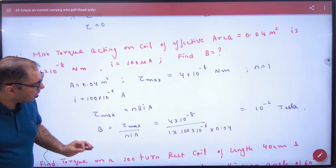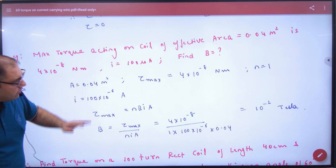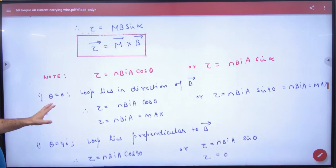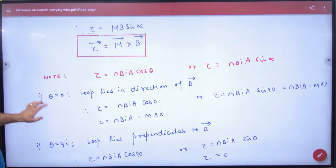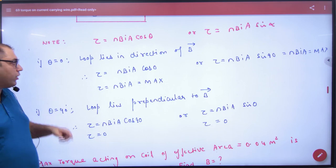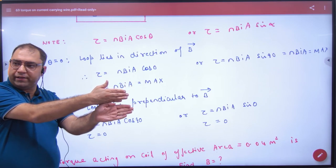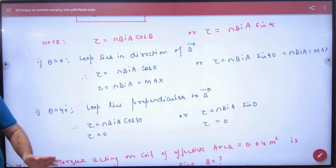Maximum torque acting on a coil of area given is enough. Now this is maximum torque. Maximum torque was very important. Torque was maximum when theta was zero. That means the loop is aligned with magnetic field. Theta is zero, alpha is 90.